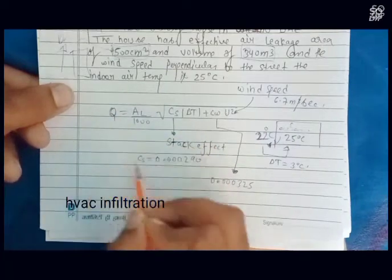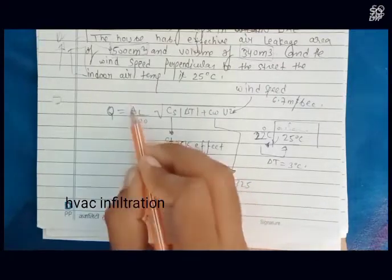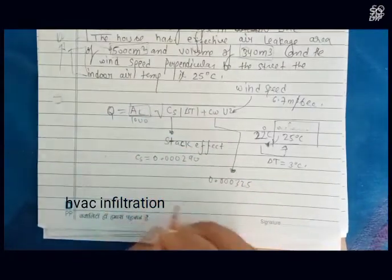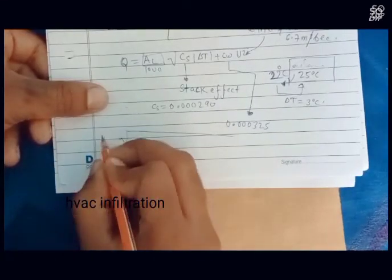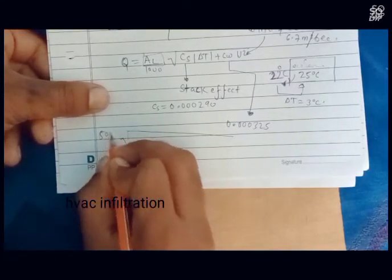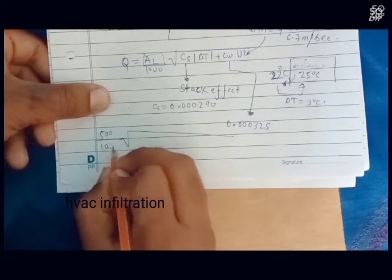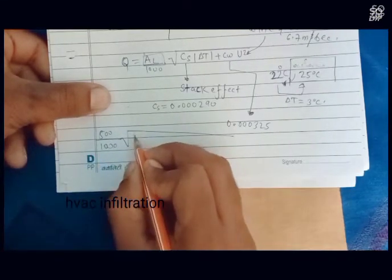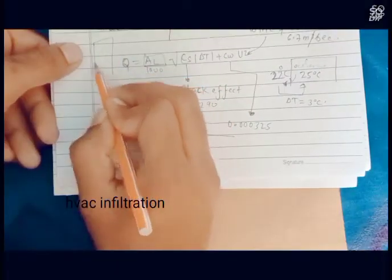Q is the amount of air leakage per second in the leakage area. We are putting in all the values. Leakage area is 500 centimeters divided by 1000. Stock effect: the stock effect means there has a higher...